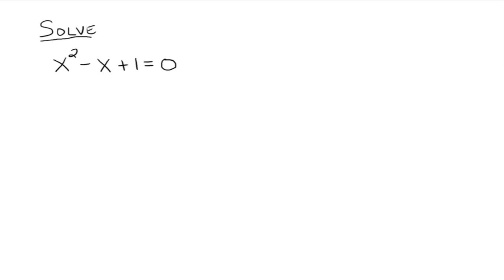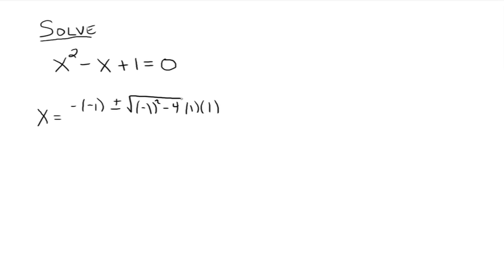Now we're going to talk about complex zeros. Solve the equation x squared minus x plus 1 equals 0. Just do your normal quadratic formula. With the quadratic formula, you get x equals negative 1 plus or minus the square root of negative 1 squared minus 4ac, all over 2a.